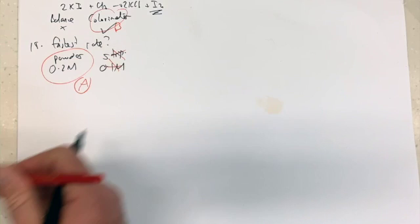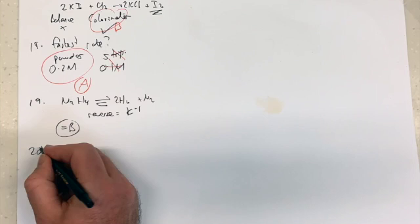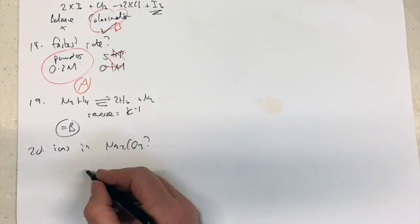18, we're talking about powders or strips, it's powder. Greatest concentration is A. 19, reversing the equilibrium, which K to the minus 1 is the inverse, so it's B.